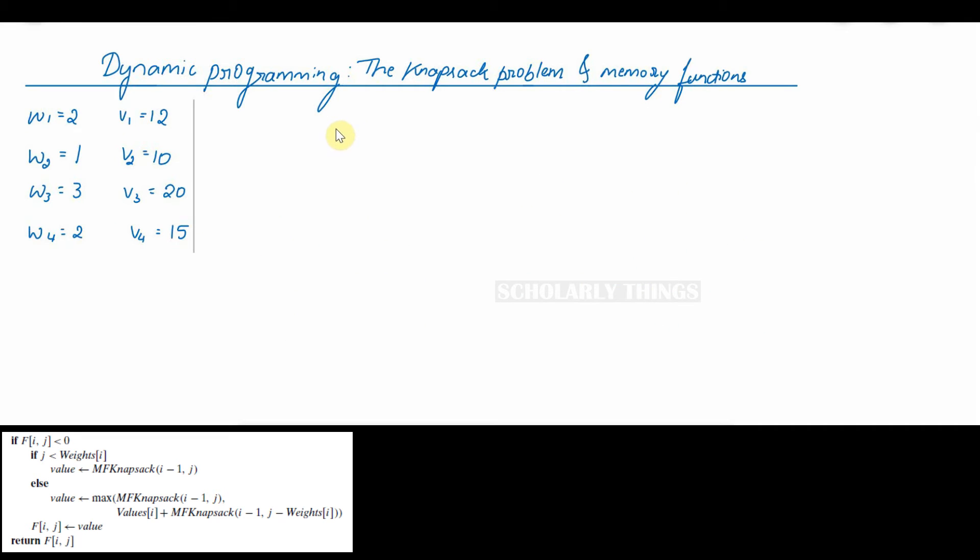Let's start with the last value that is mfk of 4 comma 5. Initially, all the values are set to minus 1. So is this value. So f of 4 comma 5 is equal to minus 1. The first condition is checking if this value is less than 0. Yes, it is less. Let's check the next condition. j is less than weights of i. This is i, this is j. So 5 less than weight of i. Weight of 4 is 2. 5 less than 2 is wrong. So we perform the else part.